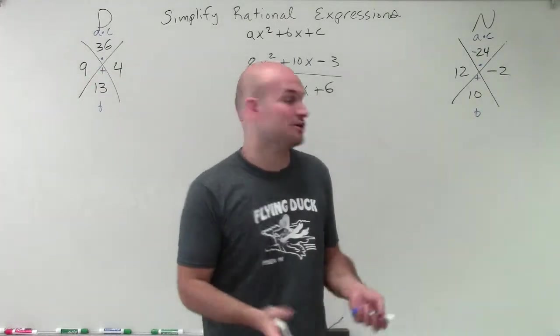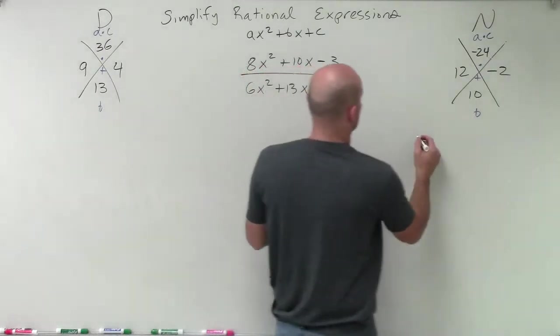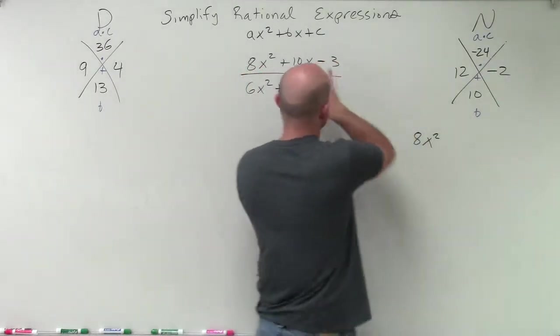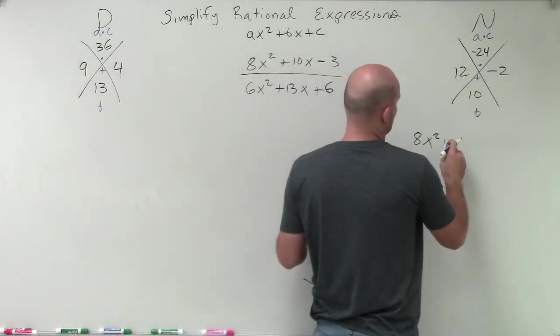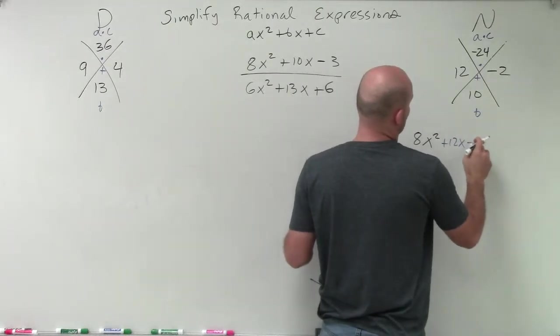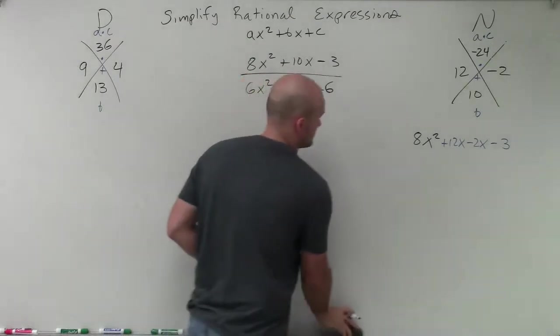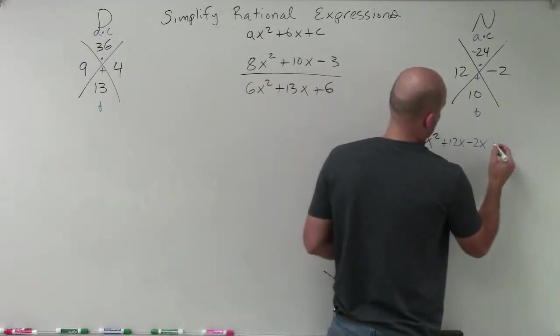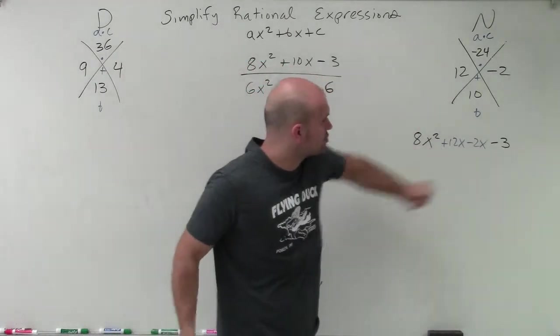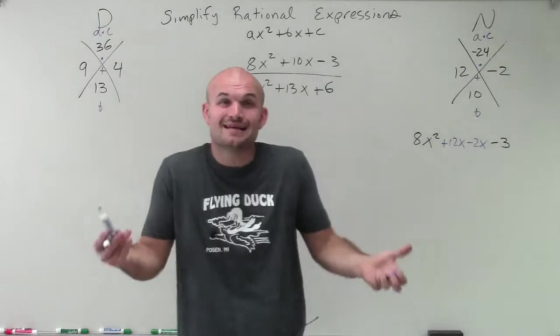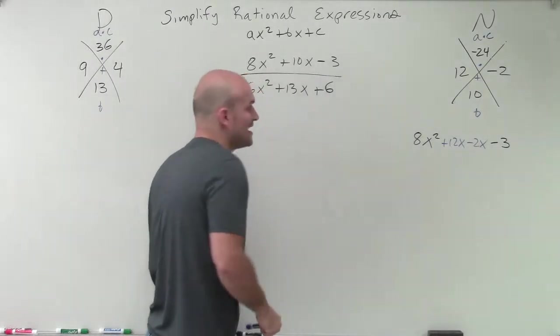All right. So the first way we're going to do this is we're just going to simply rewrite it by using our new terms. So I can rewrite this as 8x squared. And then rather than using 10x, I'm going to use my two factors to represent that. So I could say plus 12x minus 2x minus 3. OK? So all I simply did is instead of writing 10x, I wrote 12x minus 2x. It's the exact same thing.